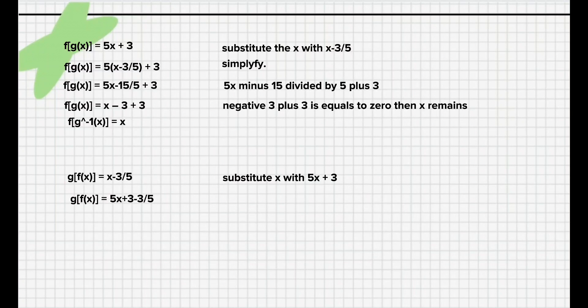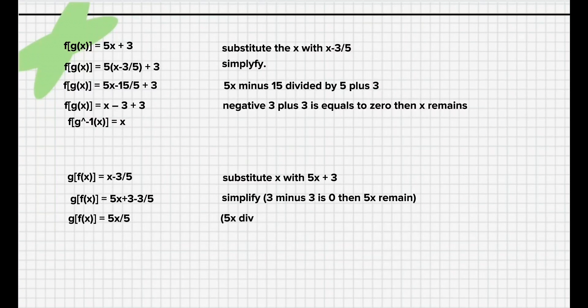So, g(f(x)) = (5x + 3 - 3)/5. We simplify: 3 - 3 is 0, then 5x remains. g(f(x)) = 5x/5. 5x divided by 5 is x.